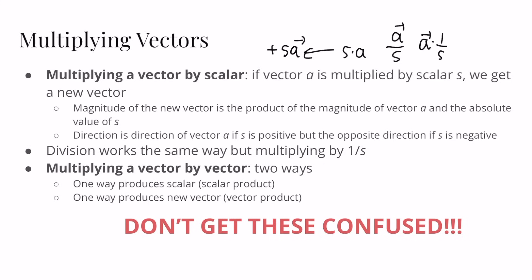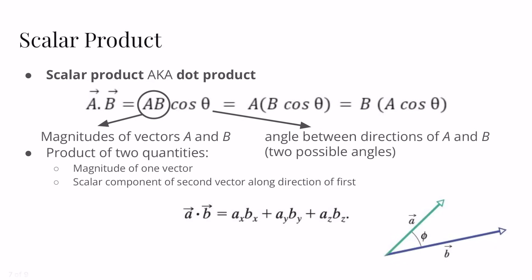If we have a vector multiplied by a vector, things get more complicated. We'll go over two ways: one way produces a scalar, which is why we call it the scalar product, and another way produces a vector, which we call the vector product. It's very important to recognize how to do these different multiplications and not get them confused, because multiplying a vector by a scalar is not the same as multiplying a vector by a vector. Let's start with the scalar product, which I personally find a little easier than the vector product.